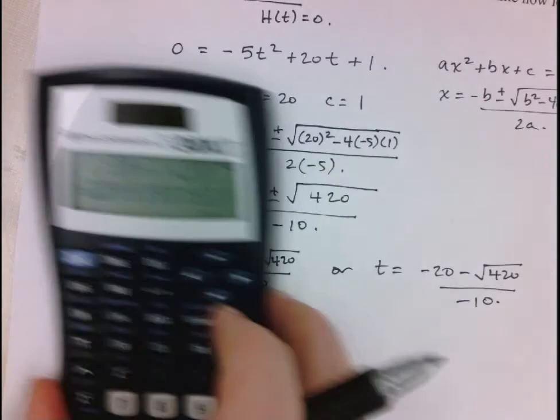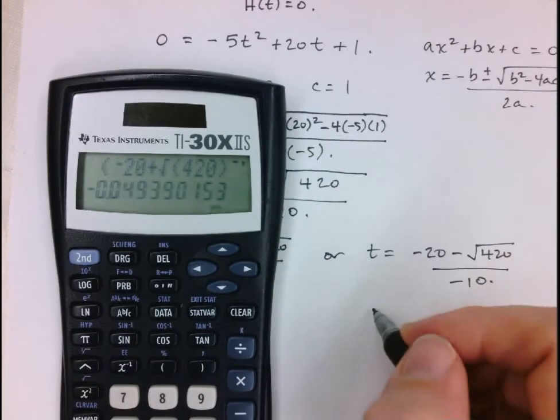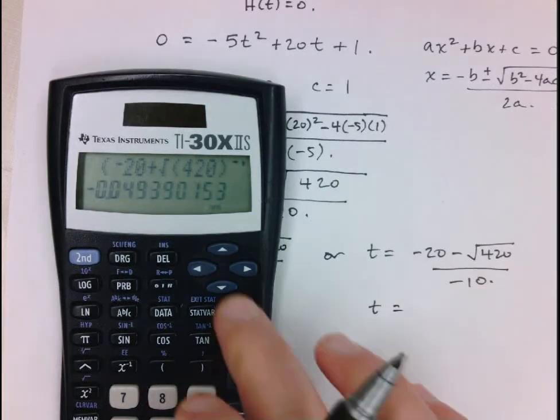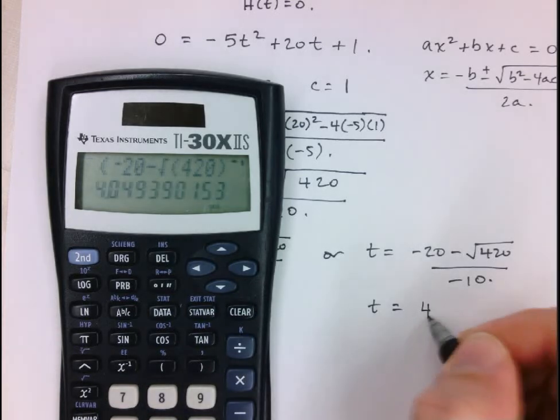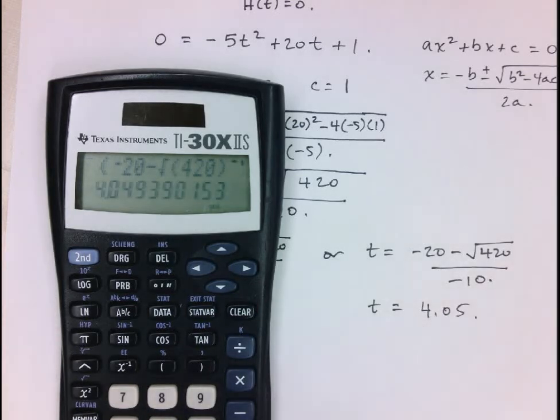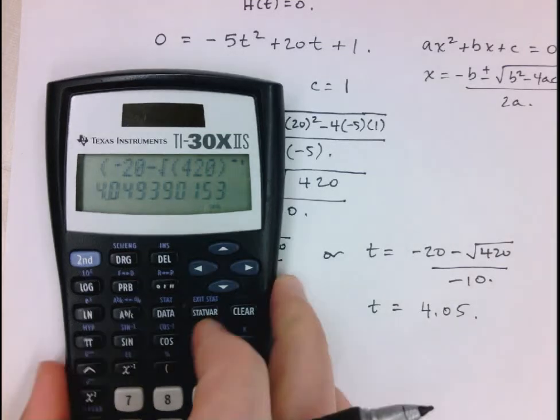And now let's do the same thing for the other answer. Let's clear that off again. So again, our numerator in brackets, negative 20 minus the square root of 420, close off the top bracket and then divide it by negative 10, and here we get this 4.05 as an approximation.